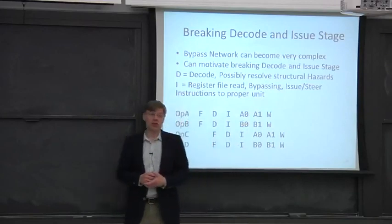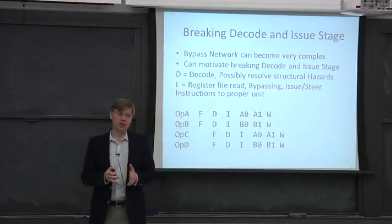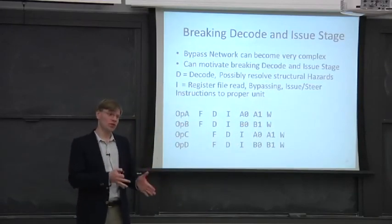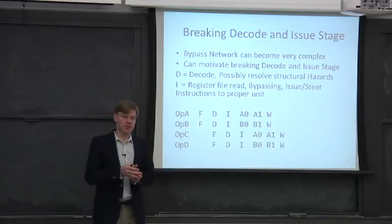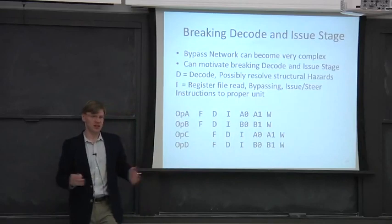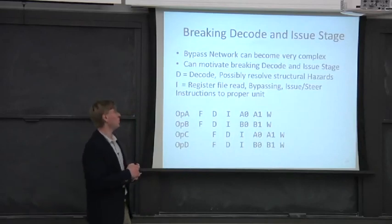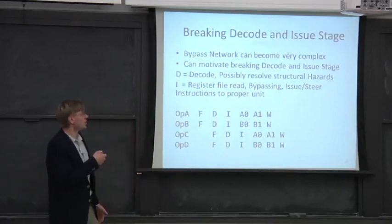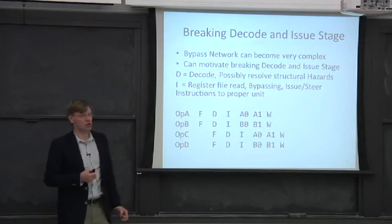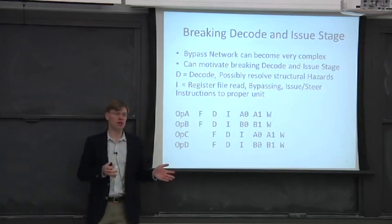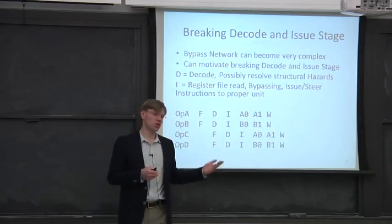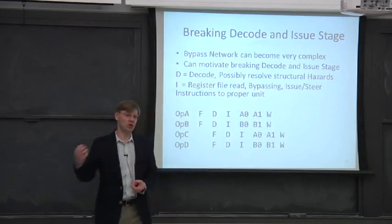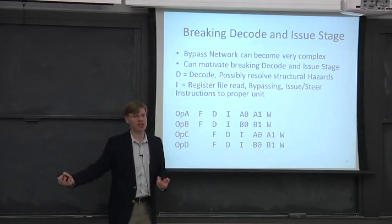One good thing to do is you can actually break the decode and the register file access into two separate stages in the pipe, effectively making a six-stage pipeline now. One thing we can do is actually just break the decode into its own pipe stage. And we can try to figure out structural hazards even in that pipe stage. They'll do decode and they'll also look to see if you're going to have a structural hazard, let's say, on a write port of the register file at the end of the pipe.